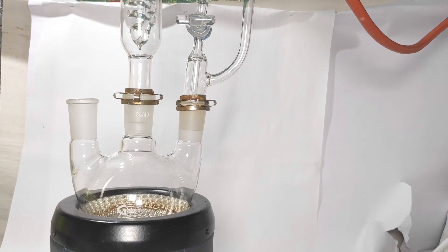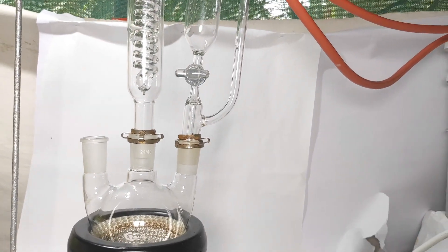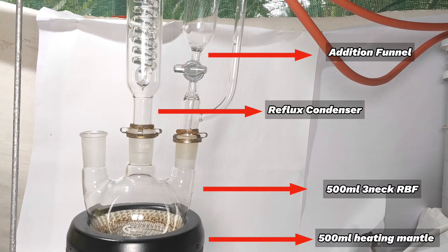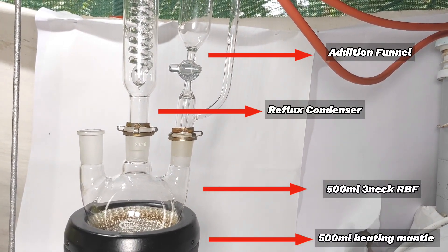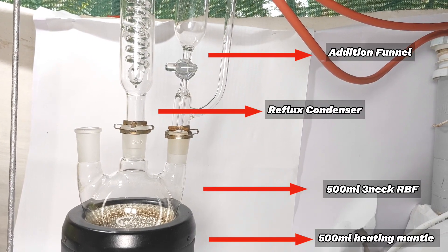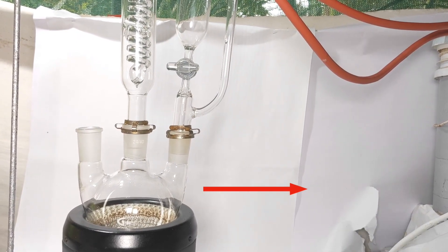A 500 ml three-neck round bottom flask is placed in a heating mantle stirrer. A reflux condenser is attached on the center neck and an addition funnel on one of the side necks. The other side neck is left free so that reagents can be charged into it.